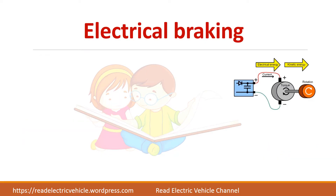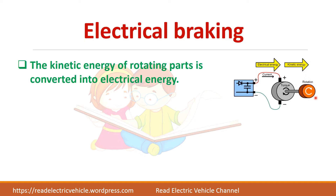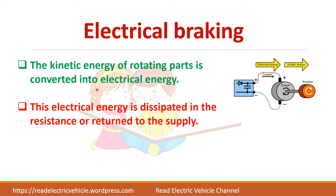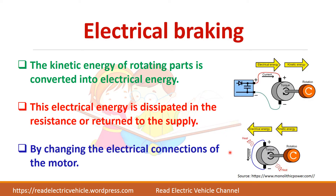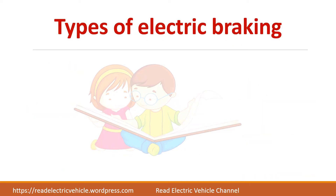When the motor rotates, the electrical energy is converted and stored in the rotating parts as kinetic energy. When we apply the electric brake, the kinetic energy of the rotating parts is converted back to electrical energy. This electrical energy is dissipated either in a resistance — so it becomes heat — or you can return this electrical energy to the supply. There are two options: either you dissipate it as heat, or you return it back to the supply. This is done by changing the electrical connections of the motor.